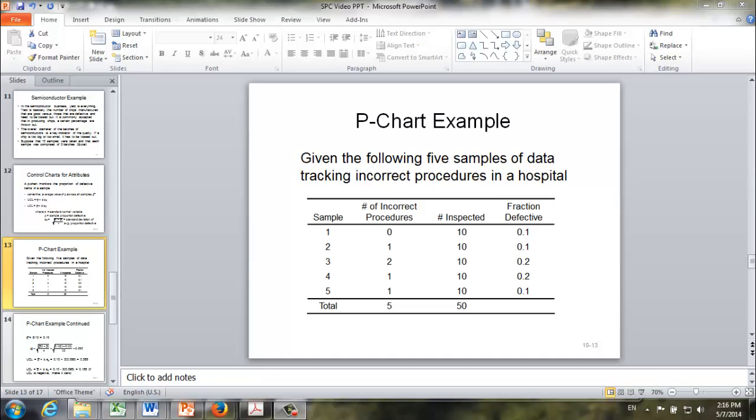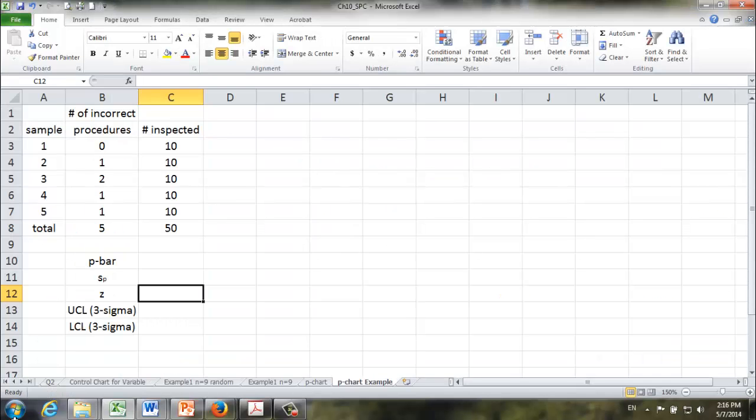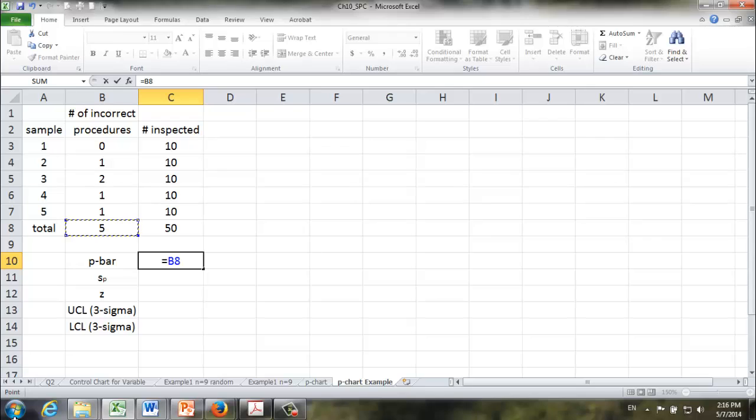Next, we are going to compute the upper and lower control limits in our Excel file. First, we're going to find p-bar. p-bar is the average defect rate. It's equal to the total number of defects divided by the total number inspected. In this case, it's 10%.